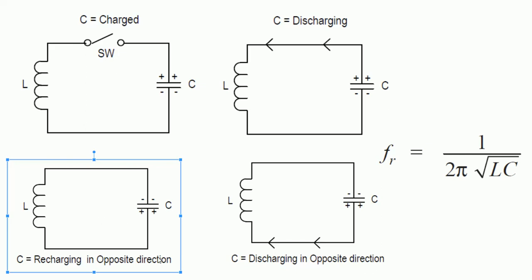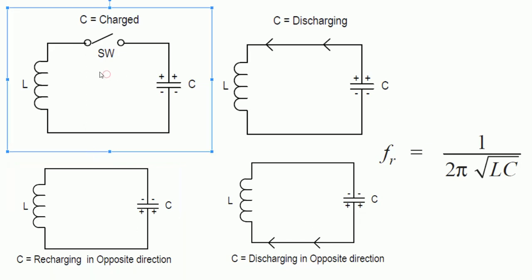When the capacitor is fully recharged with the bottom plate more positive, it starts to discharge again — transferring energy from the electrostatic field back to the electromagnetic field of the inductor, but now in the opposite direction. This creates a cycle: the charged capacitor transfers energy to the inductor, the inductor transfers energy back to the capacitor in the opposite direction, and then the capacitor sends energy back to the inductor again.